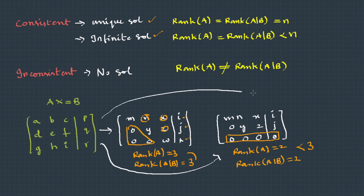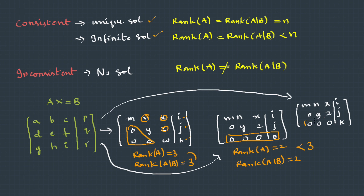The third possibility is that only one row in the coefficient matrix becomes zero, but not in the augmented matrix. The coefficient matrix then has two non-zero rows, so its rank is two. The augmented matrix has three non-zero rows, so its rank is three. Since two and three are not equal, there is no solution.